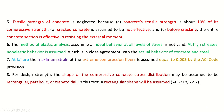Assumption 6: The tensile strength of concrete is neglected because concrete tensile strength is only about 10% of its compressive strength. Cracked concrete is assumed not effective. Before cracking, the entire cross-section is effective in resisting the external moment; after cracking, concrete on the tension side is ignored. The method of elastic analysis assuming ideal behavior at all stress levels is not valid — at high stresses, non-elastic behavior is assumed, which closely agrees with the actual behavior of concrete and steel.